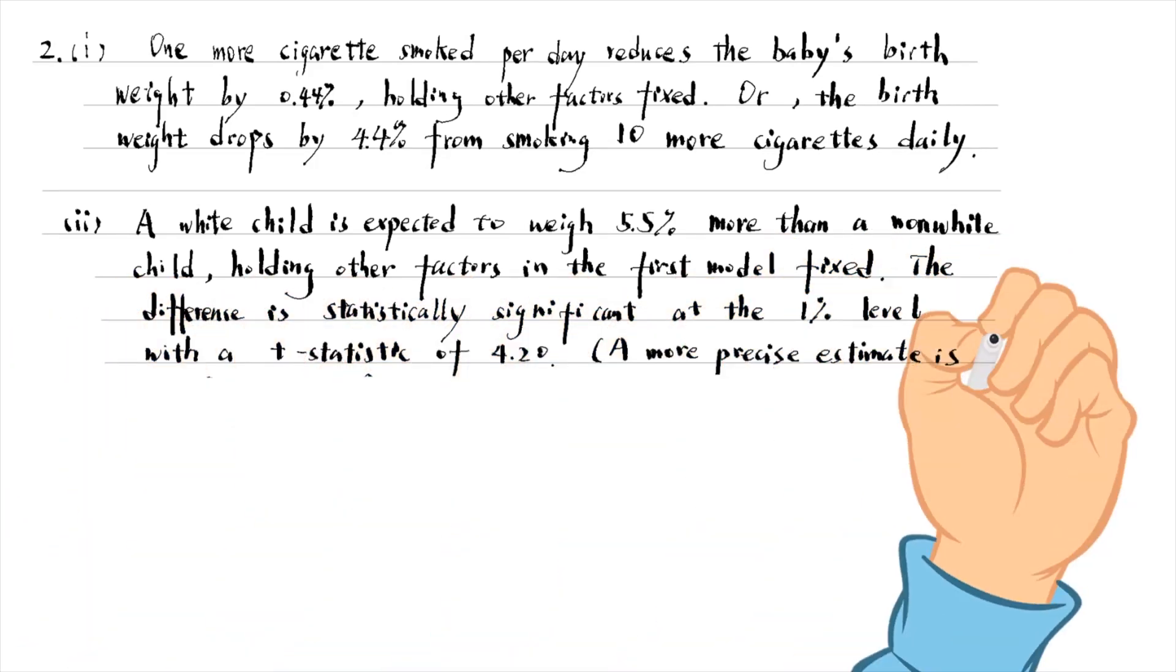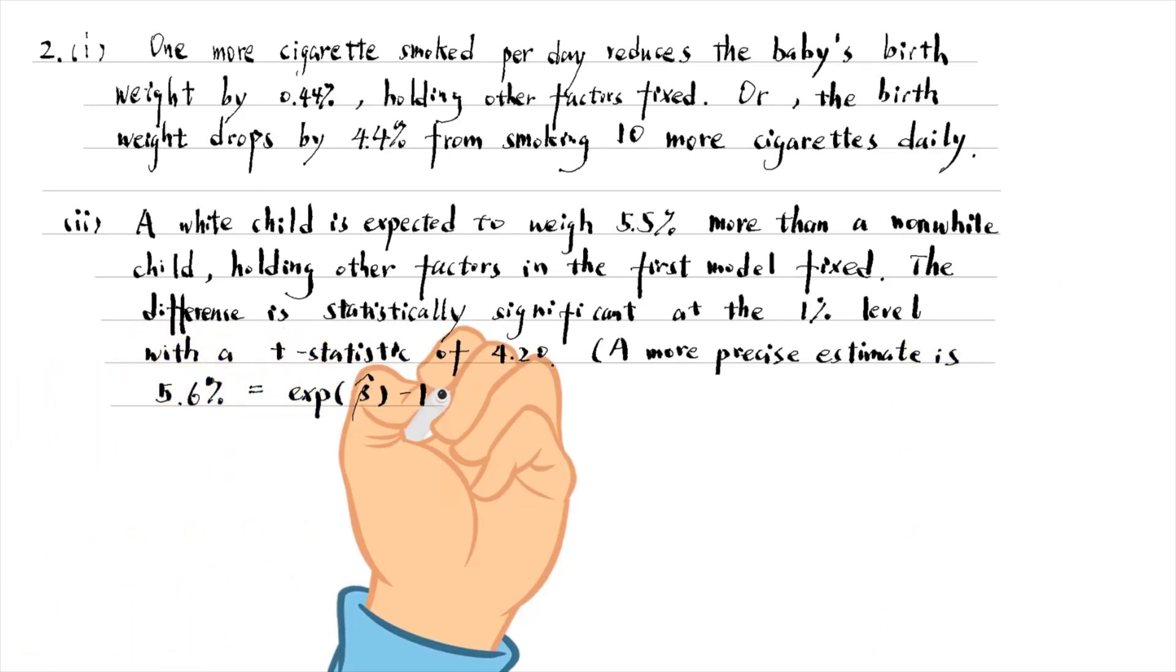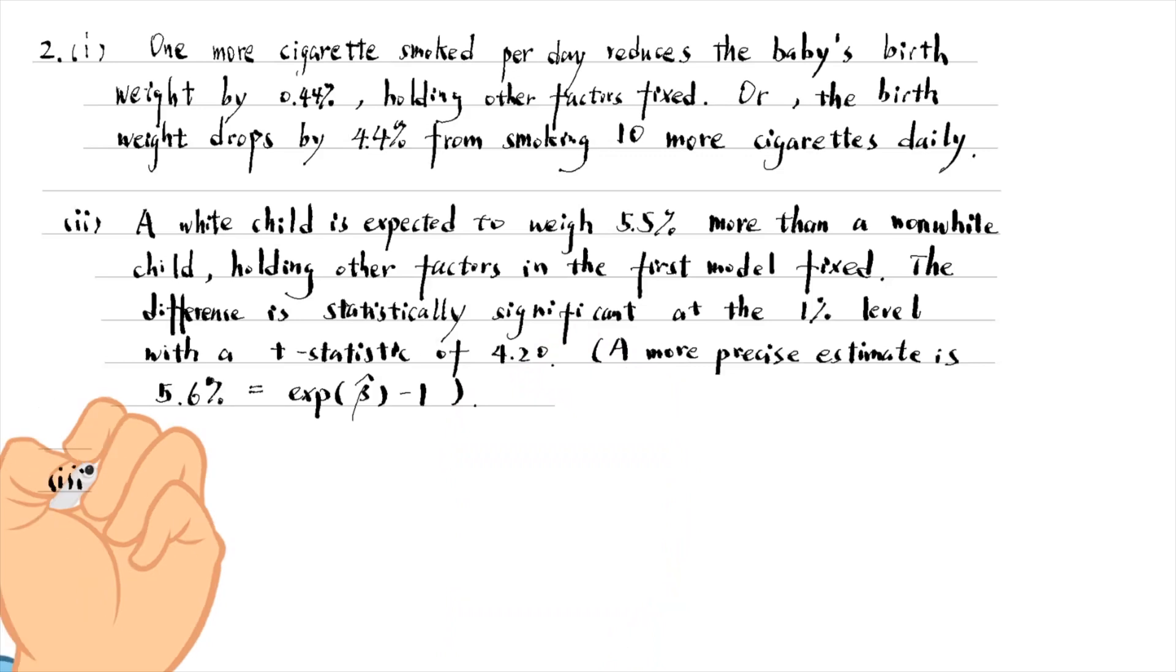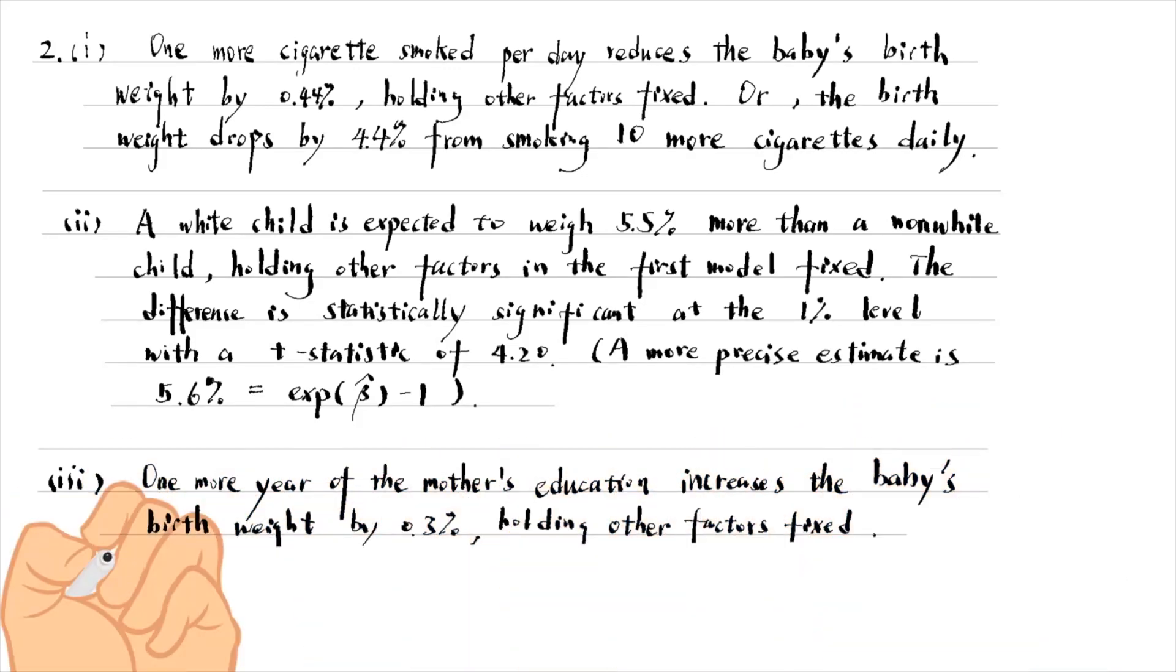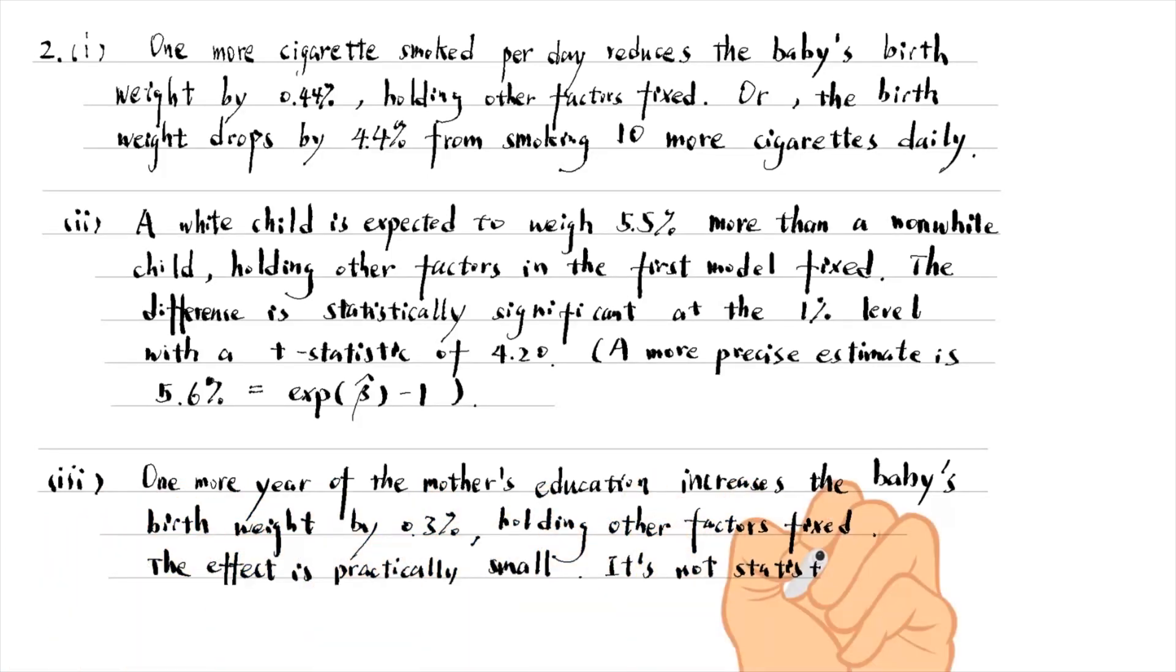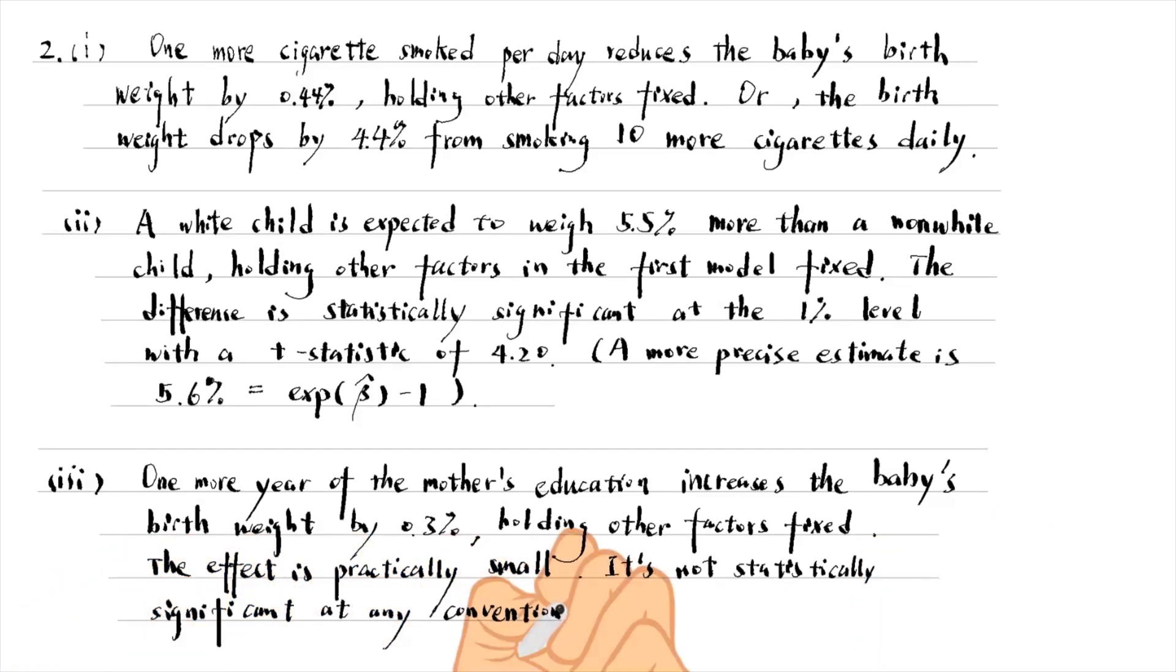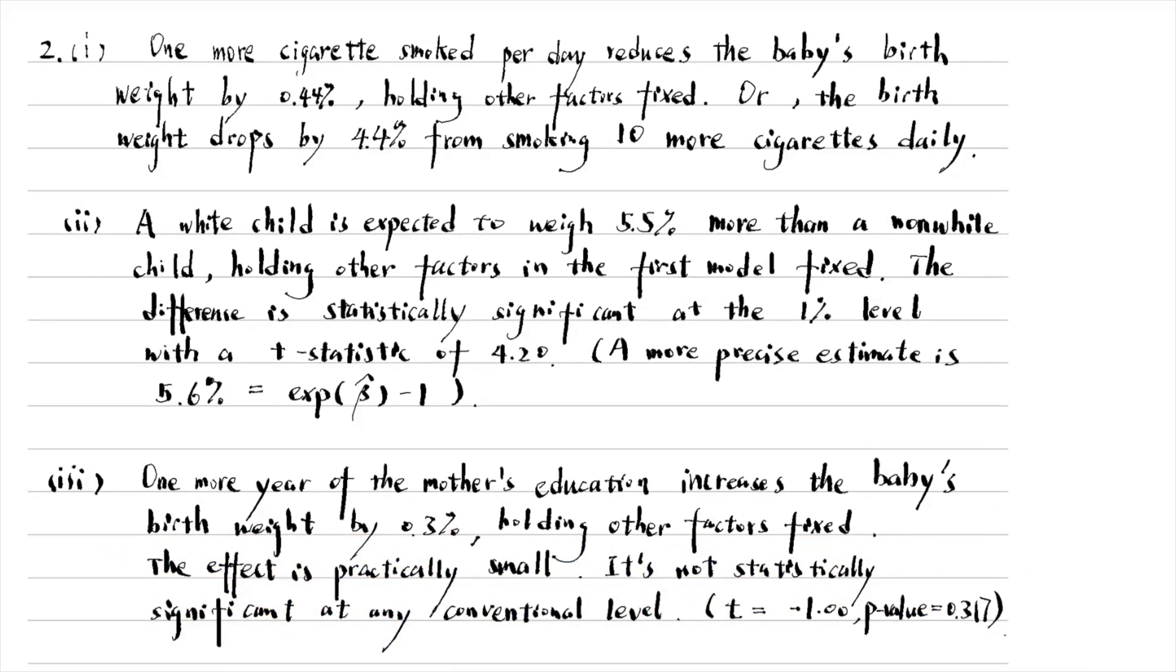In part three, we find that one more year of the mother's education increases the baby's birth weight by 0.3%, or 10 more years of mother's education lead to a 3% increase in the child's birth weight. The effect is practically small, and it is not statistically significantly different from zero at any conventional level, with a t-statistic of minus 1.00 and a p-value of 0.317.